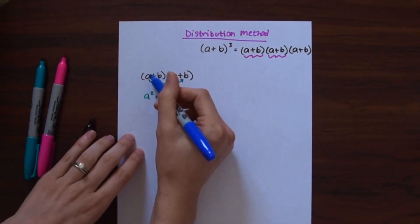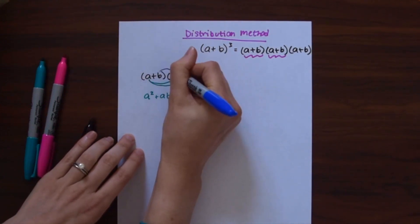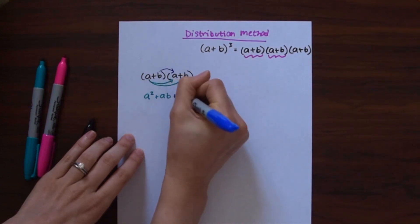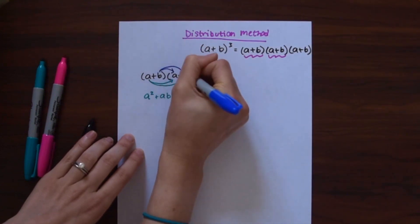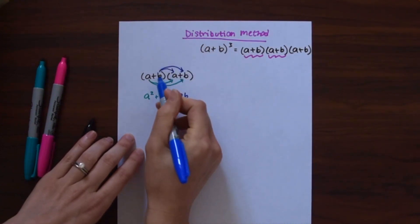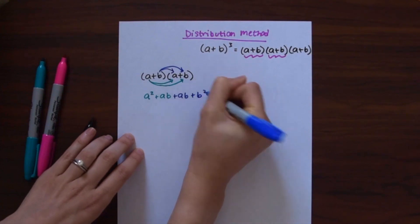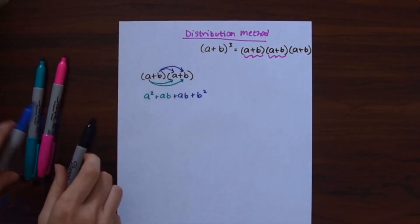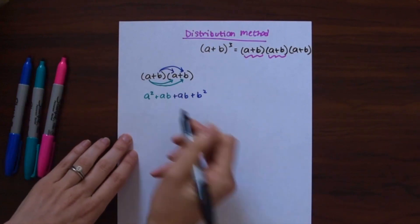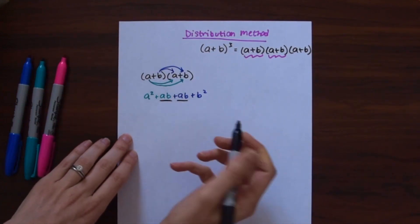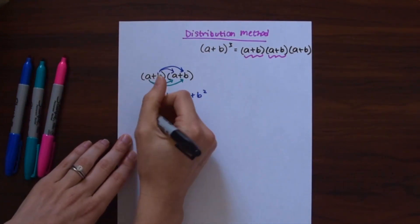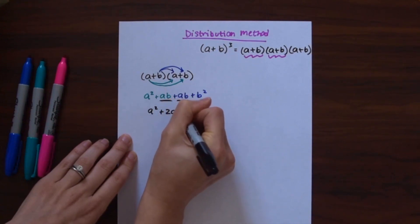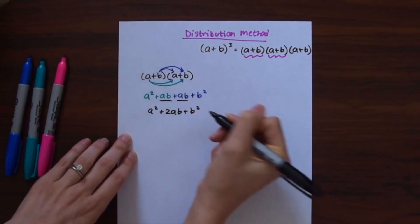So we go: a times a is a², and a times b is ab. Then b times a is ab, and b times b is b². Notice we have like terms to combine — ab plus ab — so we get a² + 2ab + b².